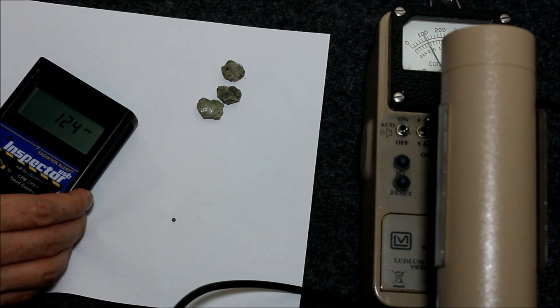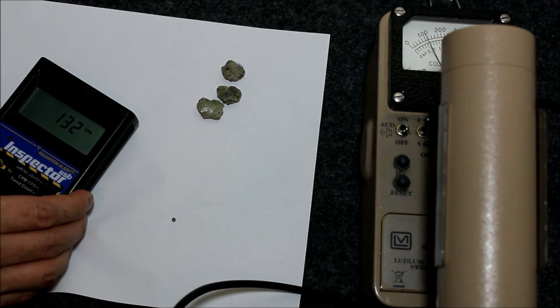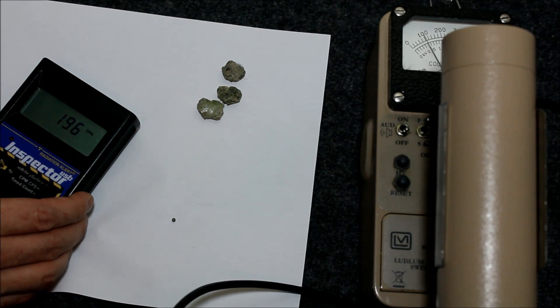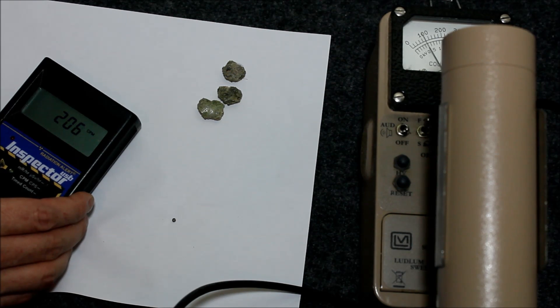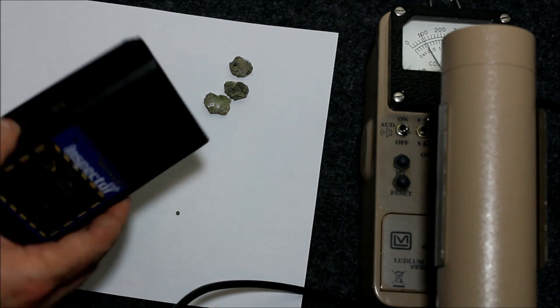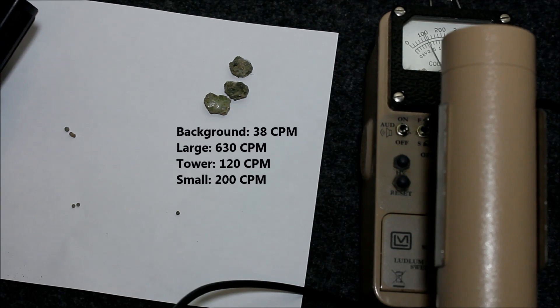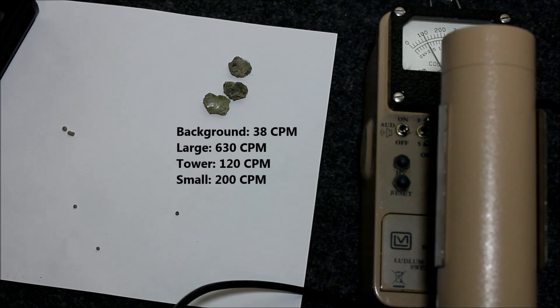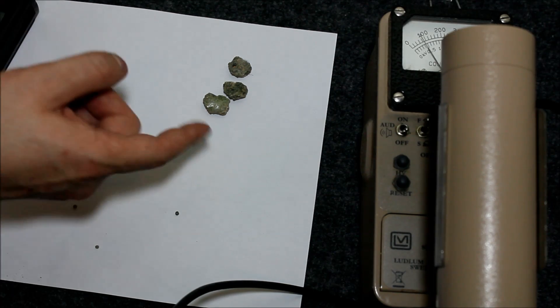Now for the small ones. Alright, so we're getting about 200 counts per minute off of the small ones. Not bad. Oops. I moved them. They fell. They rolled a little bit. Alright. So as you can see, they're not terribly radioactive.